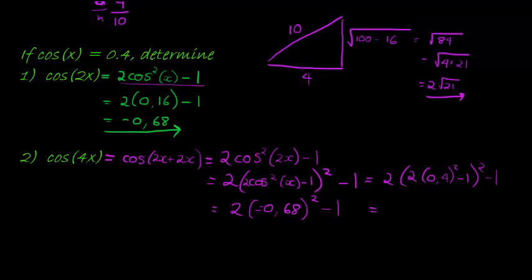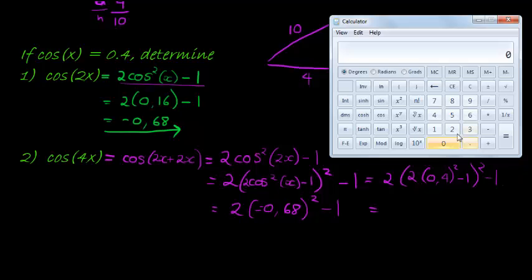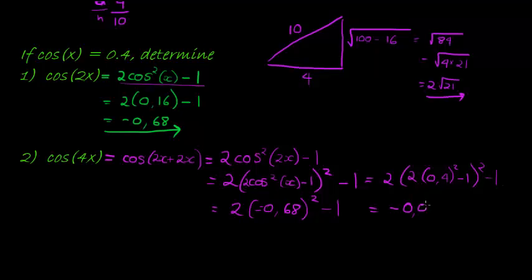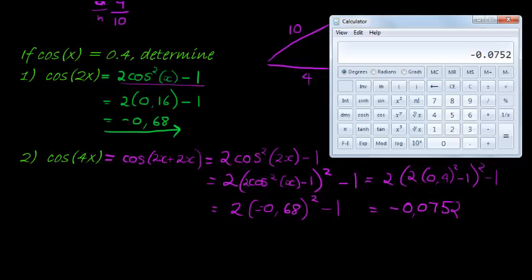We have 0.4 squared times 2, and I'm just doing this inside first. Okay, minus 1, it's negative. That's what I had there, but that must be squared as well. Okay, times 2, is that minus 1. And I get negative 0.752. Negative 0.0752. Is that it? That's it.